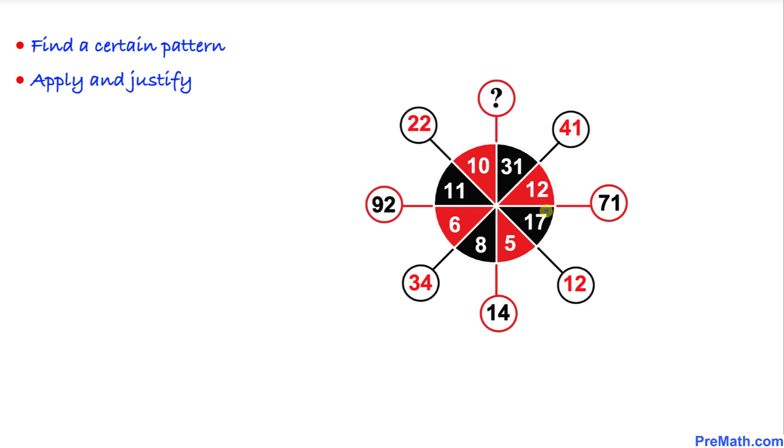Now if we look very closely, we can see that if we add these two numbers, any two consecutive slices, five plus seventeen is going to give us twenty-two. Is that right?